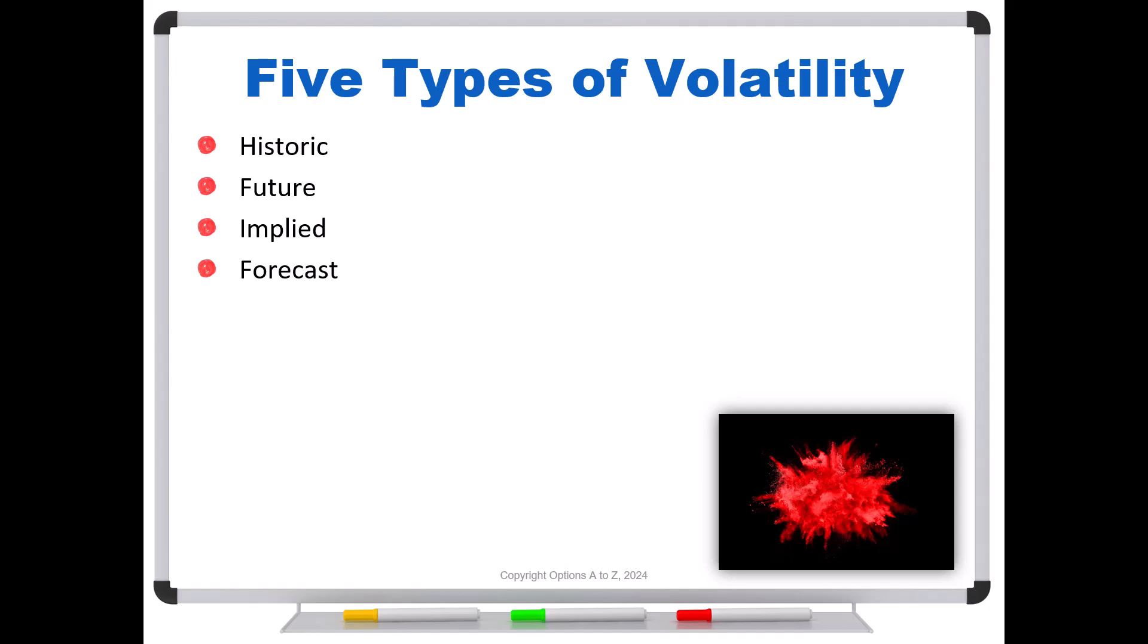You can also call another type of volatility, the forecast volatility. This would be your opinion. So you might say, well, the historic volatility has been 30%. The market's implying 35%, but I think it's going to be 50%. That would be your forecast volatility. And then finally, we have what's called the realized volatility. This is what we can say once the option has expired. Once it's hit the finish line, we can go back and say, doesn't matter what the implied was or what your forecast was, this is the answer.